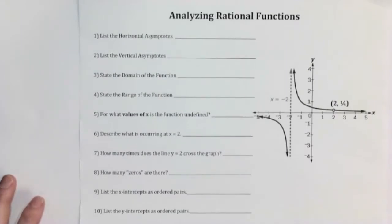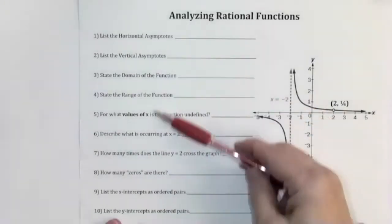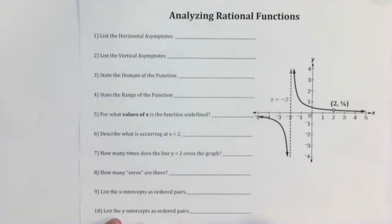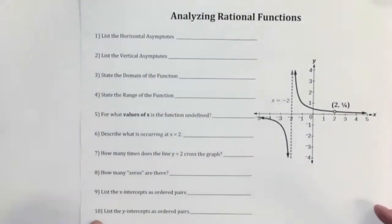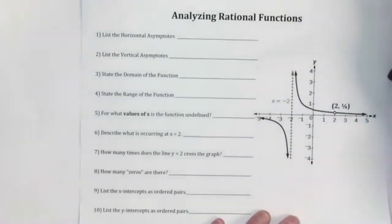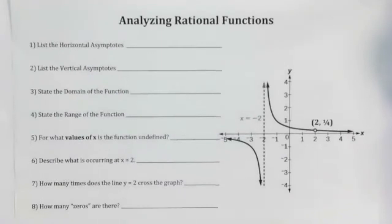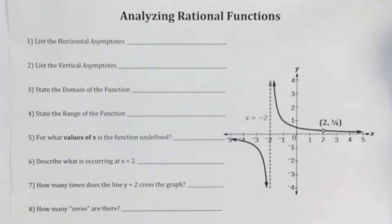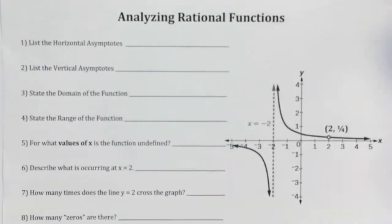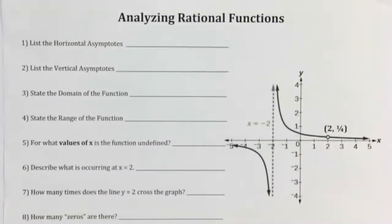We definitely talked about horizontal and vertical asymptotes, and in general we've addressed domain but not so much range. Some of these other questions we may not be able to do right now, but we should be able to do a large portion of them. I want to zoom in a little bit farther so we can focus on those questions better.